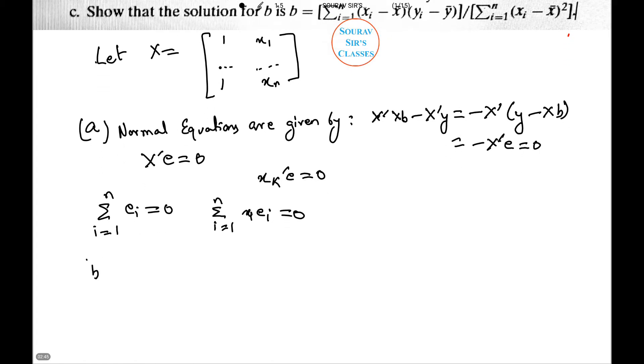For this, we use summation i from 1 to n of e_i to conclude from the first normal equation that a equals y bar minus b x bar.